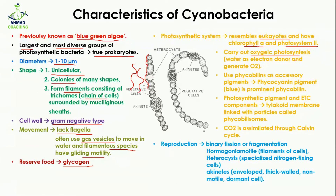They carry out oxygenic photosynthesis, meaning they use water as an electron donor and generate oxygen — the same process that occurs in plant cells.